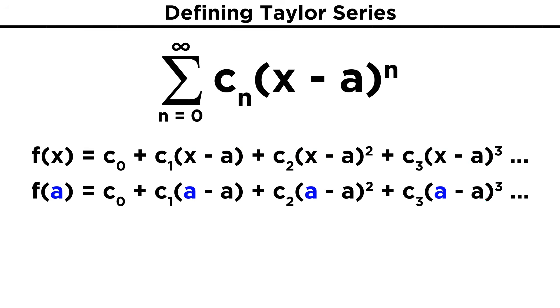If we find f of a, all of these binomials become zero, and therefore all of these terms become equal to zero except for the first coefficient here, c zero. So f of a equals c zero. With the first coefficient down, how do we get the next one?